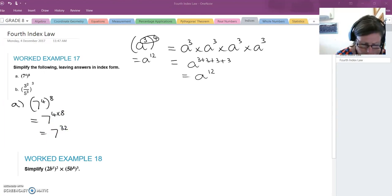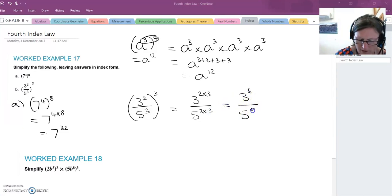Our next example, 3 squared over 5 cubed, all raised to the power of 3. Let's look at the top, 3 to the 2 times 3, and on the bottom 5 to the 3 times 3. So on the top we have 3 to the power of 6, and on the bottom 5 to the power of 9.